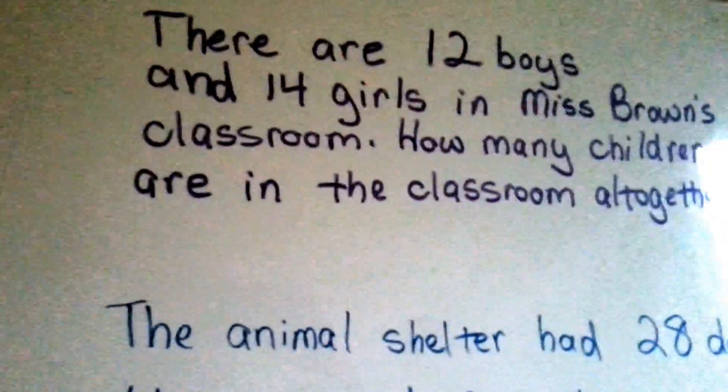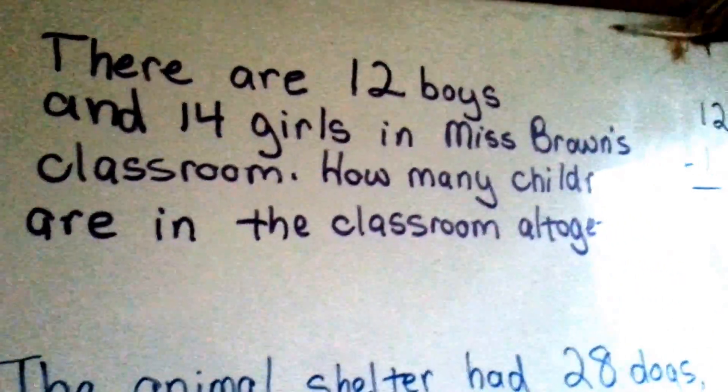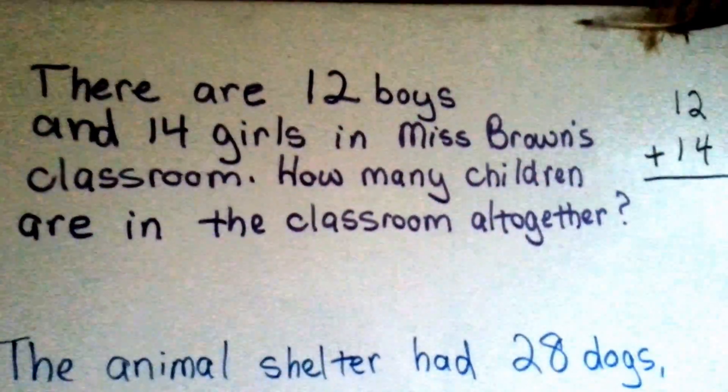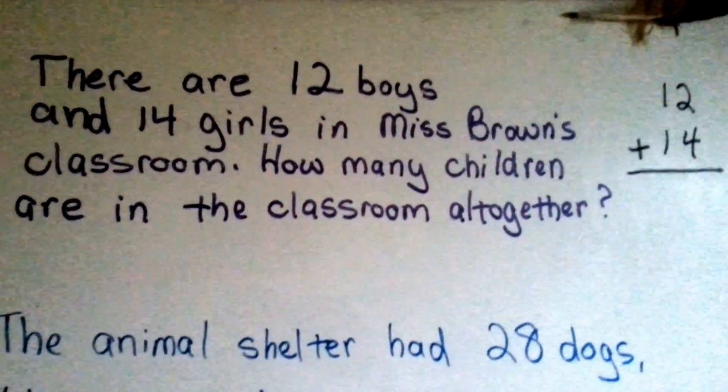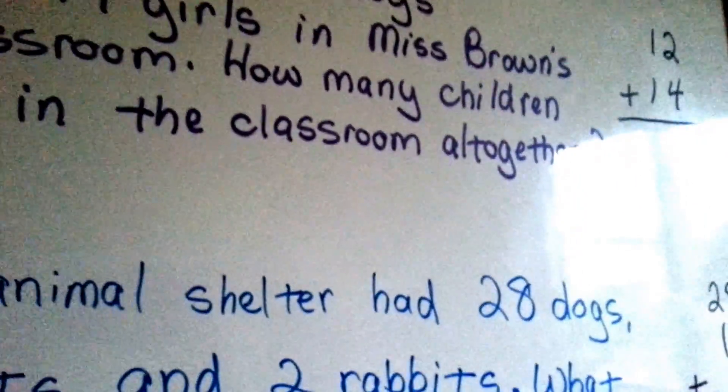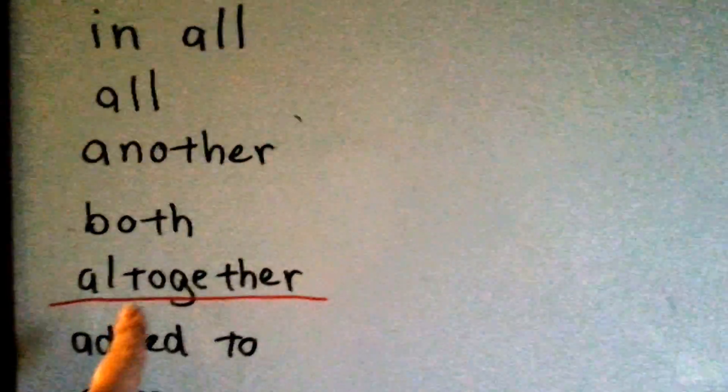So let's look at this first word problem. There are twelve boys and fourteen girls in Miss Brown's classroom. How many children are in the classroom ALL TOGETHER? So, ALL TOGETHER is right here. It's one of our addition words.